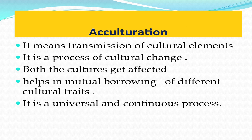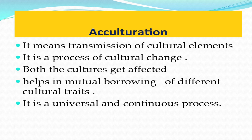The first social process we are going to talk about is Acculturation. Acculturation basically means the transmission of cultural elements from one social group to another. This happens when two different forms of cultures come together — for example, a North Indian culture and a South Indian culture. We all know that these two cultures differ in terms of food, dress, language, and other aspects. When individuals from these two cultures come together and interact with one another, they may try to imbibe the cultural practices of one group from the other.